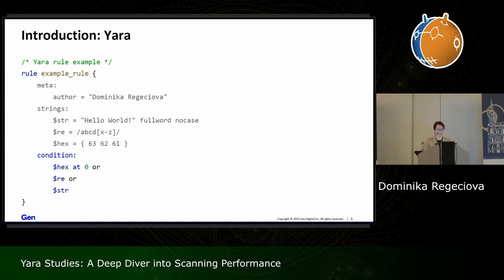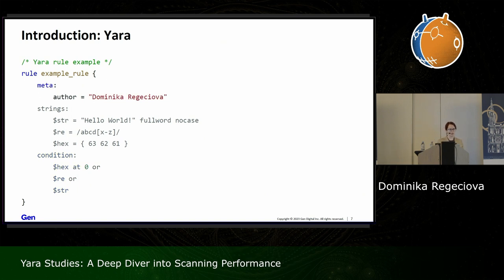The condition is the only truly mandatory part of a Yara rule. It is basically a Boolean expression which is evaluated against the sample currently being scanned — if true, the sample is matched; if false, it is not. You can use logical operations like OR, and you can also reference strings defined in the strings section, as well as functions from modules like the cuckoo module. Meta information is very useful for storing author info, malware family, and versioning.